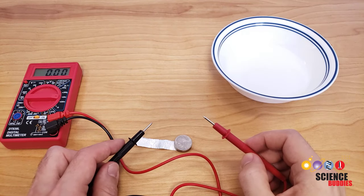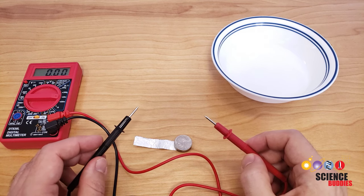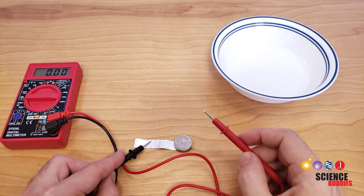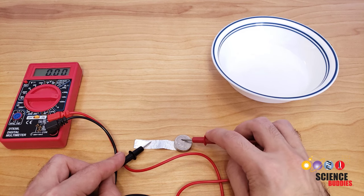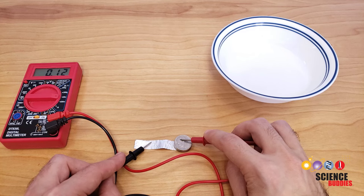You can measure the current produced by your battery by switching the multimeter dial over to the DC current setting and again touching the black multimeter probe to the aluminum foil and the red multimeter probe to the nickel. However, note that doing so effectively short circuits the battery, so the current reading will drop very quickly as a chemical reaction occurs and the battery begins to drain.